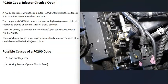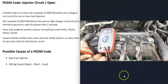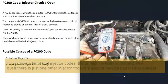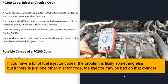Some possible causes of a P0200 code: the main things are either a bad fuel injector or some kind of issue with the wiring going to it. There are different ways to go about troubleshooting this depending on whether you're getting codes on one cylinder or maybe two.